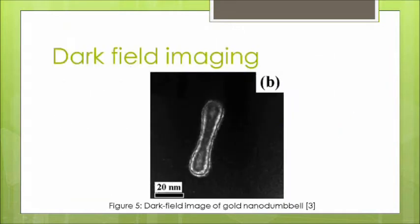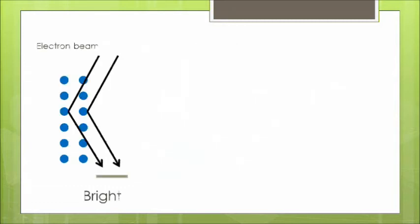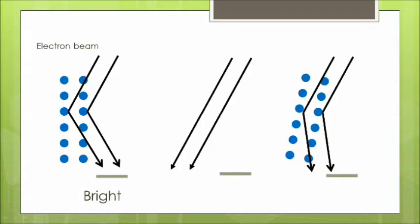A dark field imaging uses a phenomenon known as Bragg scattering. The conditions for an incident wave to be reflected happens at a specific angle. To observe this image, we have to block out the central electron beam and position the electron beam at that specific incident angle. The scattered beam that comes back at us represents the area where there is matter, and the intensity depends on the incident angle. The remaining area where Bragg scattering conditions are not met remains dark.